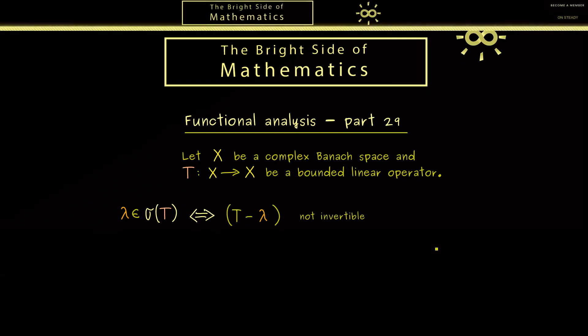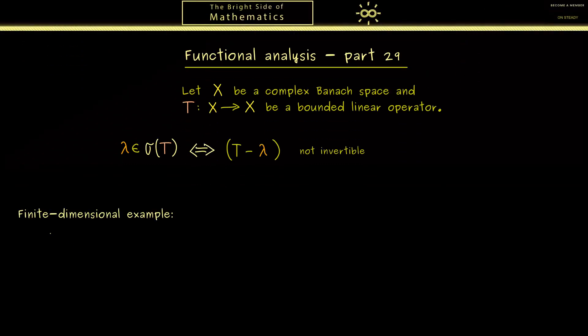Then let's go immediately to our first example. A good start would be to look at a simple finite-dimensional example. Therefore our Banach space X is given by ℂⁿ, and our linear operator T should act on any vector x.